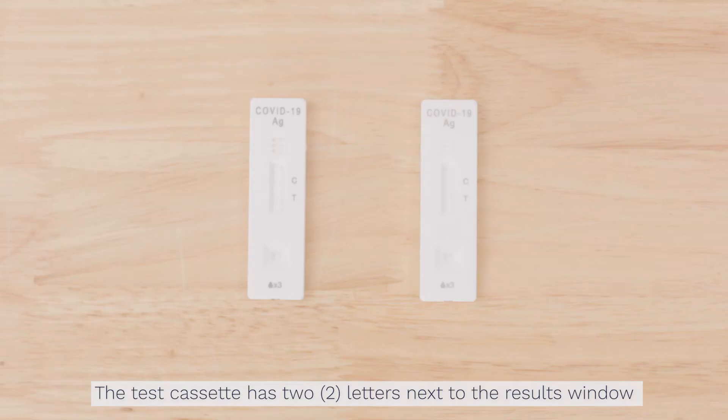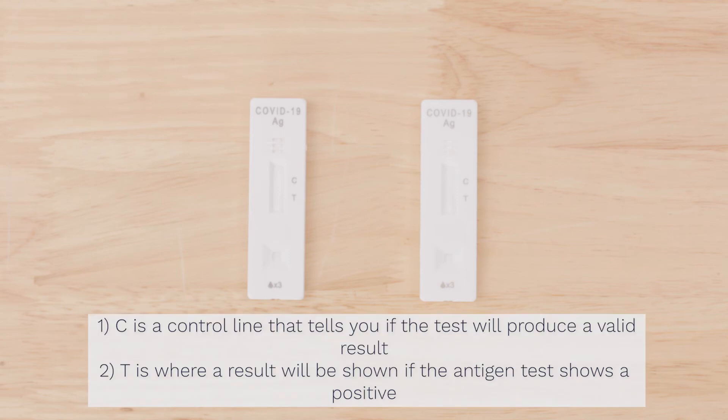The test cassette has two letters next to the results window. C is a control line that tells you if the test will produce a valid result. T is where the result will be shown if the antigen test shows a positive.